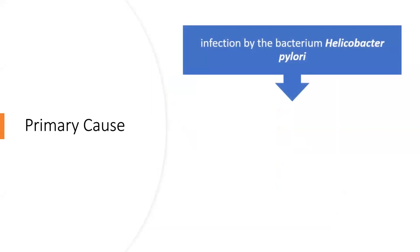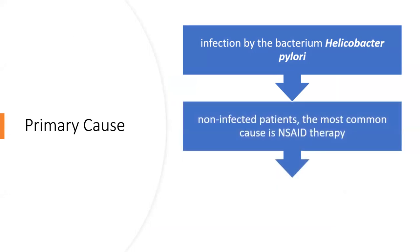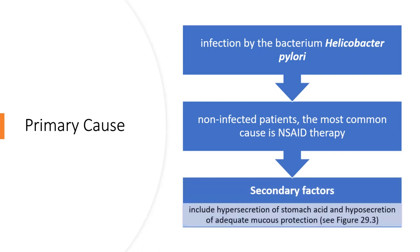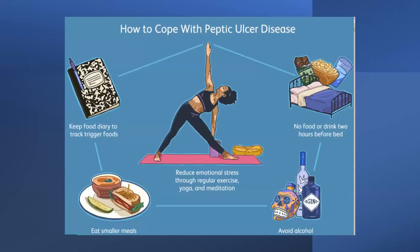The primary cause of peptic ulcer disease is infection by the bacterium named Helicobacter pylori. For non-infected patients, the most common cause is NSAID therapy — patients taking too many NSAIDs. Secondary factors include hypersecretion of stomach acid and hyposecretion of adequate mucus protection.